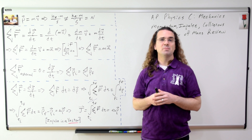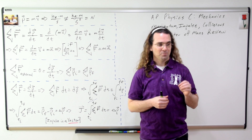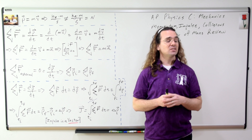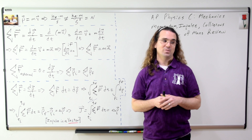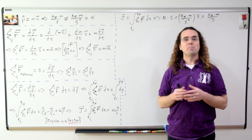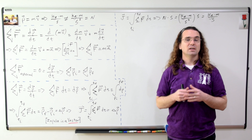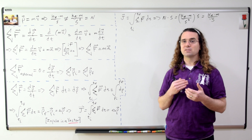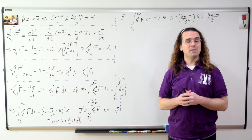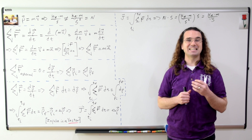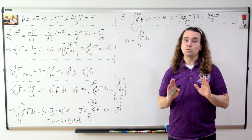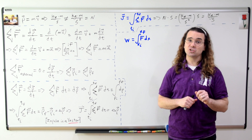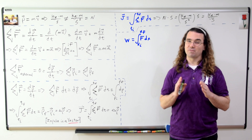Because impulse is force times time, the units for impulse are newton seconds — which are equivalent to the units for momentum, kilogram meters per second. Remember, integrals are the area under the curve. Therefore, impulse is the area between the net force as a function of time curve and the horizontal time axis, where area above the time axis is positive and area below is negative. Also, do not confuse impulse with work — work is the definite integral of force with respect to position, not time.